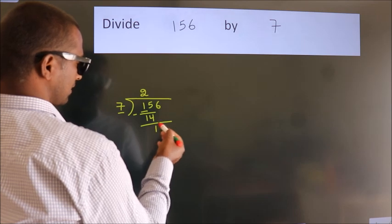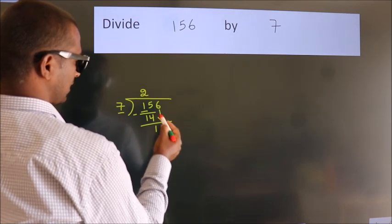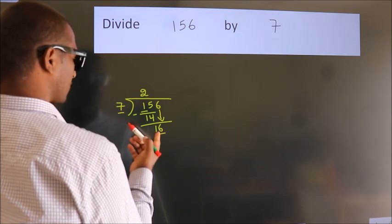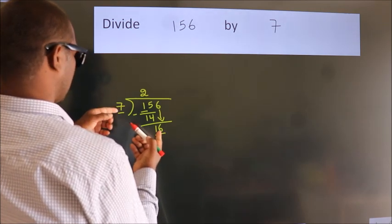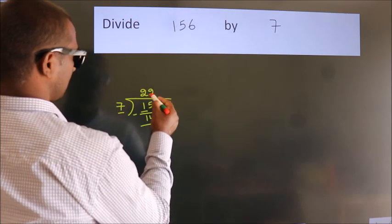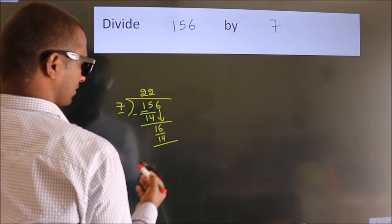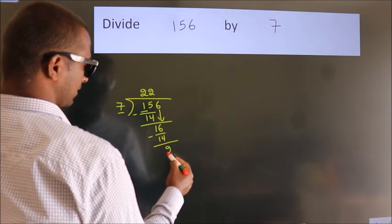After this, bring down the beside number. So 6 down, so 16. A number close to 16 in the 7 table is 7 twos, 14. Now we subtract. We get 2.